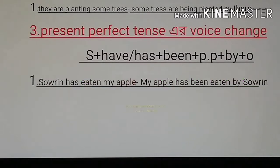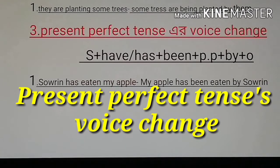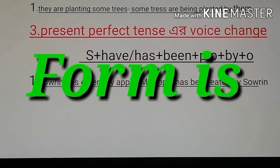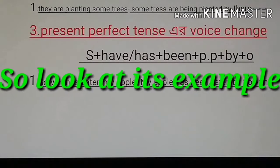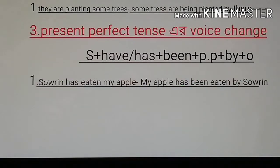Next one is present perfect tense voice change. The formula is: subject + have/has + been + past participle (PP) + by + object. Look at its example: 'Soren has eaten my apple.' The passive voice form is: 'My apple has been eaten by Soren.'